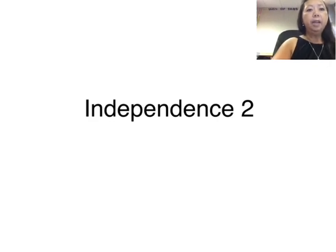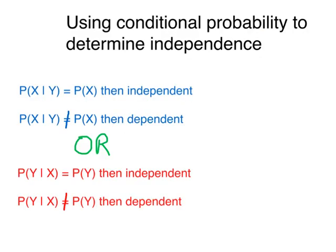Today we're going to find another way to determine independence using conditional probability. So here's how we use conditional probability to determine whether two events are independent. We have two events called events x and y. If the conditional probability equals the probability without the condition, then the two events are independent — they do not affect each other.